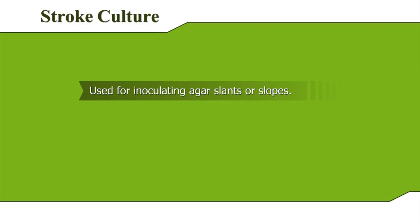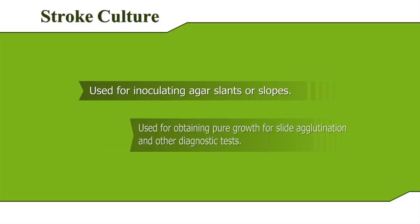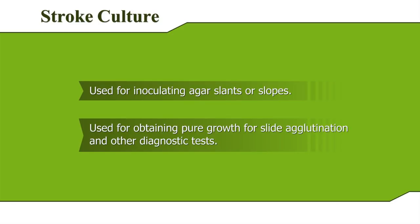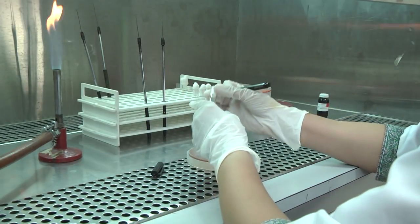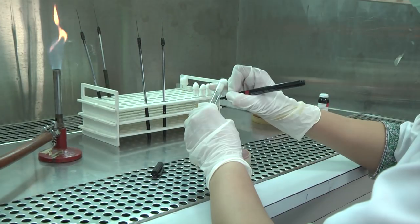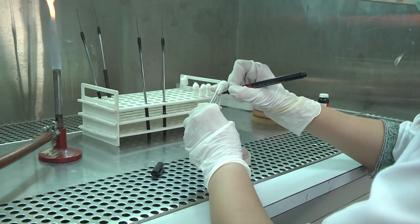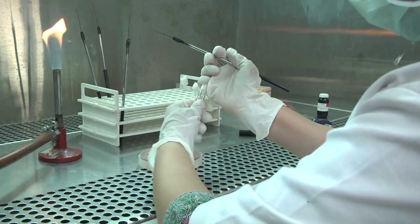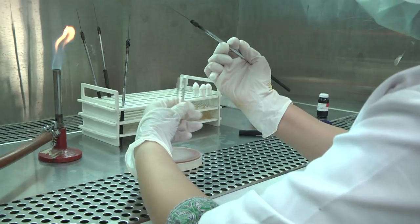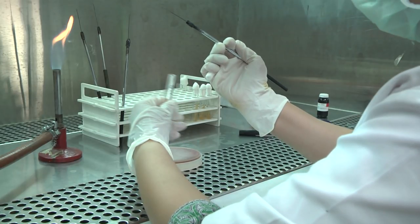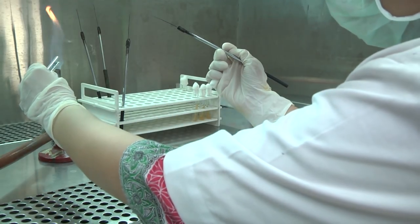Stroke Culture. This method is generally used for inoculating agar slants or slopes. It is used for obtaining pure growth for slide agglutination and other diagnostic tests. Take a tube or bottle with an agar slant medium and label it before inoculating. Loosen the cotton plug or cap. Remove the cap or cotton wool plug of the bottle or test tube with the broth culture with the little finger of your right hand and flame the neck.